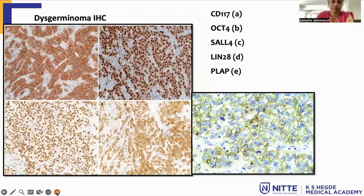On immunohistochemistry, the first picture shows CD117 with cytoplasmic membrane positivity. The second is NANOG, which is a nuclear marker. Third is SALL4, which is also a nuclear marker. LIN28 is a cytoplasmic marker. PLAP is a cytoplasmic membrane marker. All these markers are positive in dysgerminoma.